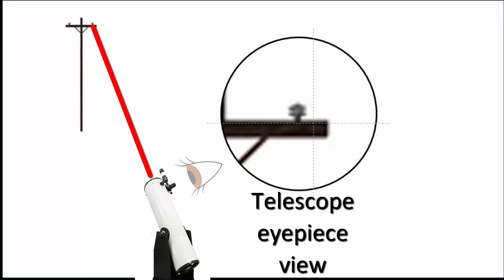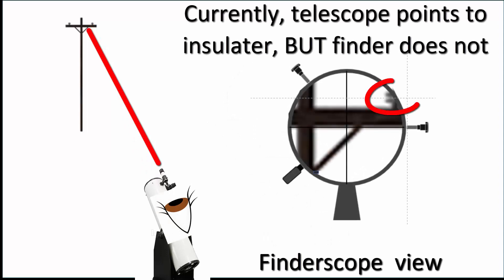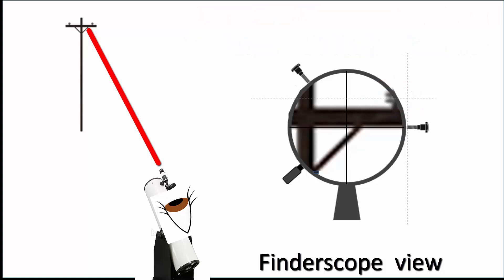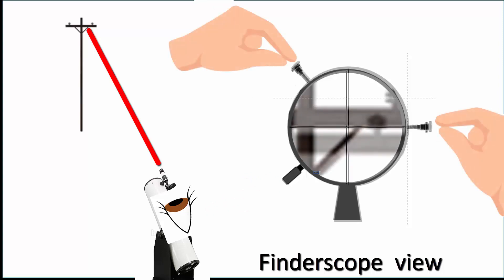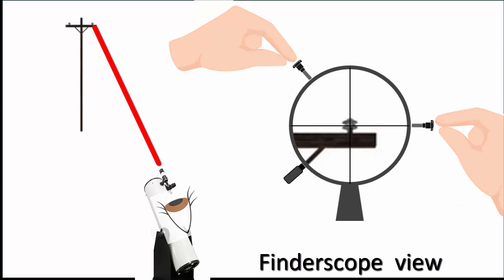Without bumping the telescope, now look through the finder scope. You need the finder scope crosshairs to aim at the pole tip or tree branch you just pointed the main telescope to. You achieve this by moving the crosshairs in the finder scope rather than moving the actual telescope. On the finder scope you will find two adjustment screws and a third spring-loaded point that you can't adjust. Again, without bumping the main telescope, slowly screw the adjustment screws in or out so as to make the crosshairs move across the field of view and sit over your target pole top or distinctive branch.